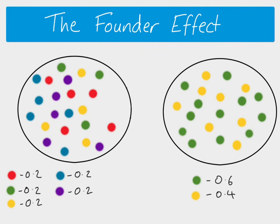The founder effect often occurs when new islands are colonized for the first time, and it has implications for the development of new species. After the founding population arrives on a new island, it also affects the population's ability to have the adaptations needed to deal with environmental changes — but that's something to explore another time. The founder effect causes changes in allele frequencies, resulting in a population very different in terms of allele frequency and genetic diversity from the original, and not representative of it.